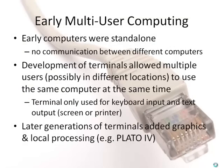It wasn't always like this. Early computers were standalone with no communication between different computers, and to use a computer you had to be standing next to it. Development of terminals allowed multiple users, possibly in different locations, to use the same computer at the same time. A terminal would provide a keyboard and some kind of text output, which could be a screen or a line printer. Later generations of terminals added graphics and local processing systems such as the Plato system.